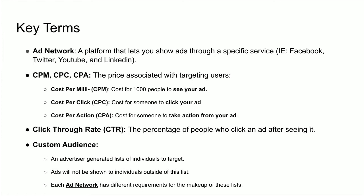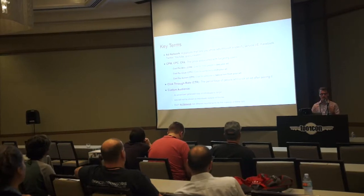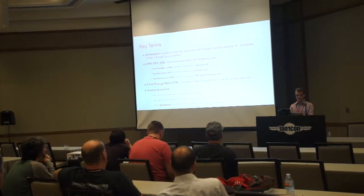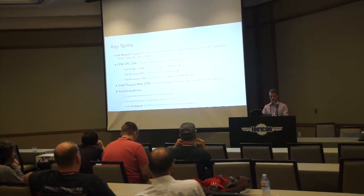CPM stands for cost per milli, or the cost for 1,000 people to see an ad. Cost per click (CPC) is the cost for someone to click your ad. Cost per action (CPA) is the cost for someone to take action after viewing your ad. With every ad placed on a network, there's something called a click-through rate — if two people click your ad after 100 people have seen it, that's a 2% click-through rate. Every relatively modern ad network will have something like a custom audience — an advertiser-generated list of users containing phone numbers or email addresses, and ads will only be shown to users on that list.